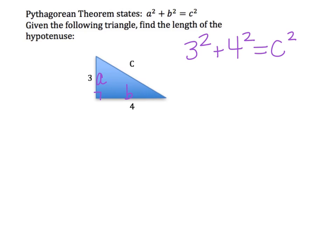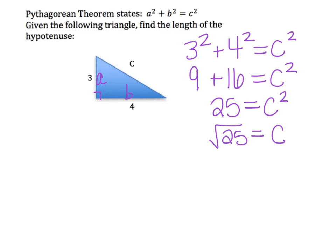Now we just need to solve this equation for C to find out the length of the hypotenuse. 3 squared is 9, plus 4 squared is 16, and that still equals C squared. 9 plus 16 is 25, and we get 25 equals C squared. So I'm looking for a number that when I square it, I get 25. If it's not one you just know, what you can do is find the square root of 25, and that will give you C. And so the square root of 25 is just 5.